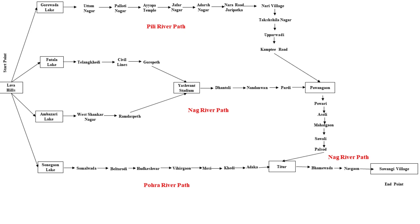Pohara River originates from Lava Hills, joining Sonegaon Lake, then flows through Somalwada, Belthirodi, Hudkeshwar, Vihirgaon, Mosi, Khedi, Adaka and meets Nag River at Titur.